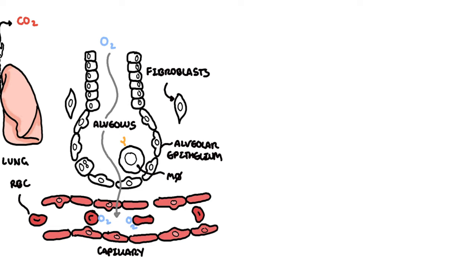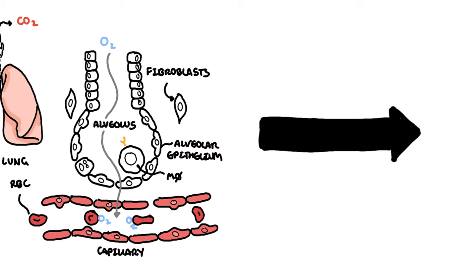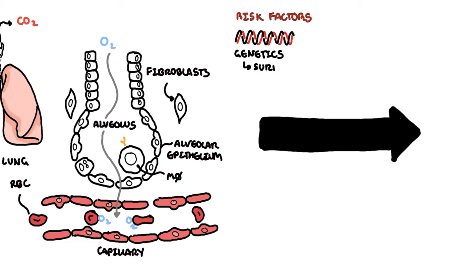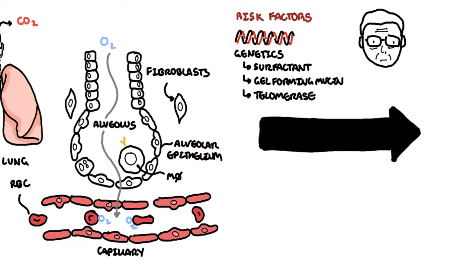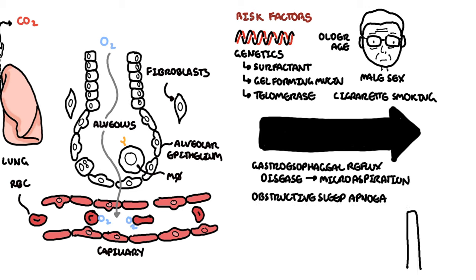The exact cause of idiopathic pulmonary fibrosis is unknown, but certain risk factors have been identified, including genetic factors such as issues with surfactant proteins, gel-forming mucin, and telomerase. Other risk factors include older age, male sex, cigarette smoking, gastroesophageal reflux disease — where micro-aspirations can trigger IPF formation — obstructive sleep apnea, air pollution, and herpes infection.